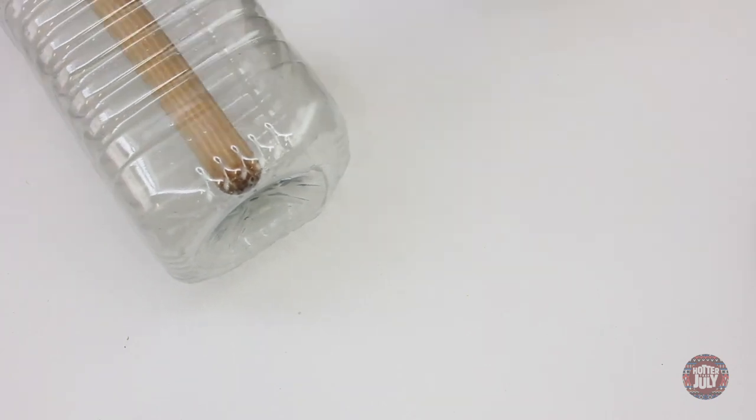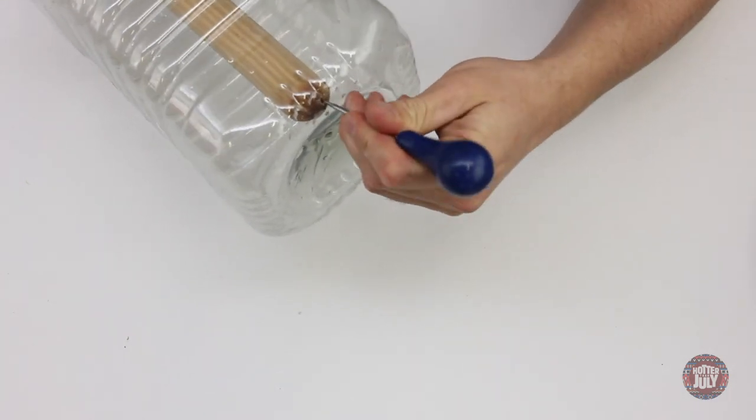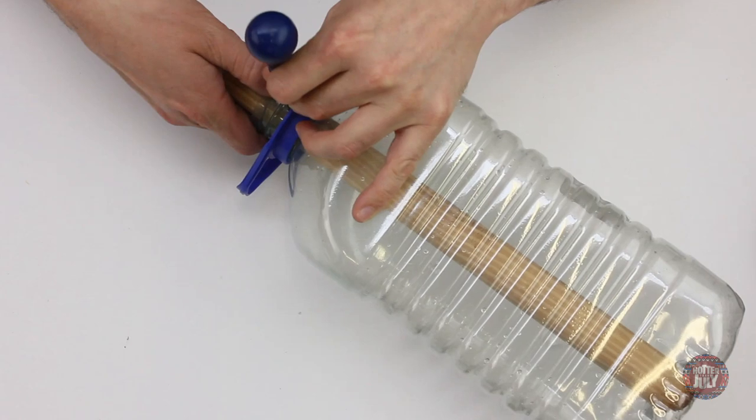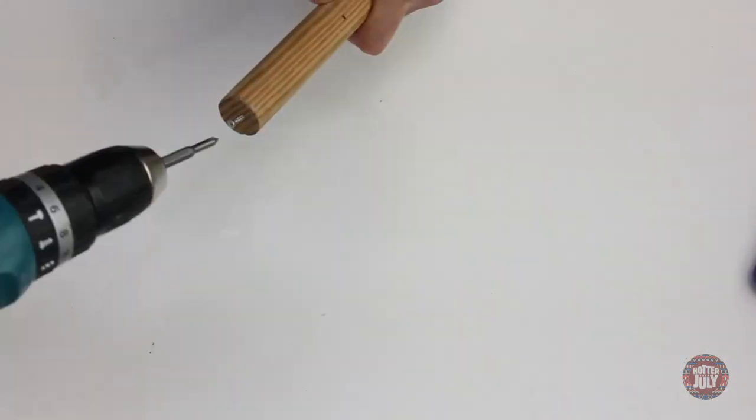Begin by drilling or boring pilot holes for the screws, which will secure the broom handle to the water bottle and act as mounting points for each end of the string. Then use a drill or screwdriver to screw them in.